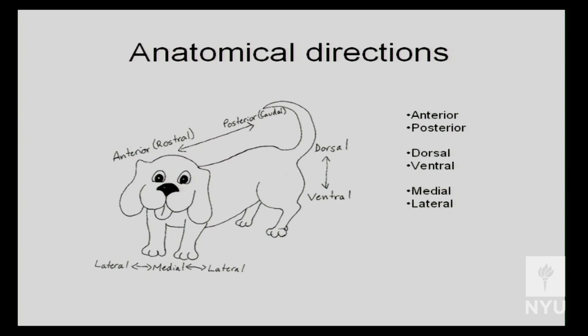Dorsal is towards the back; ventral is towards the stomach. Anterior means towards the front or towards the head; posterior means towards the back. Medial means towards the midline of the body; lateral means towards the sides, closer to your ears. For example, your nose is more medial and your ears are more lateral.